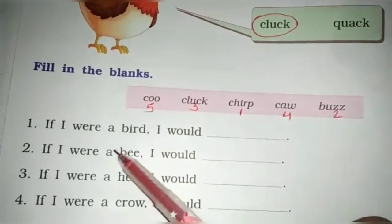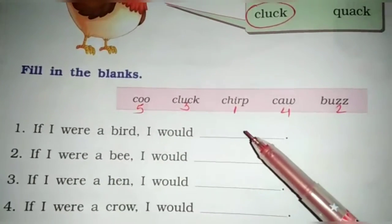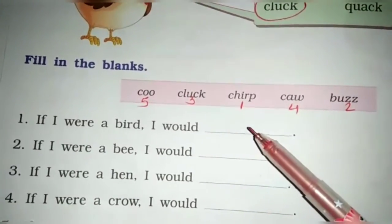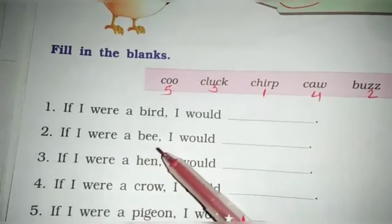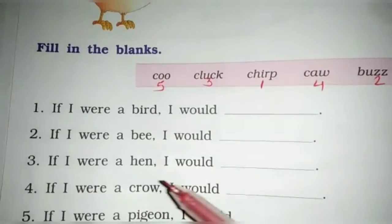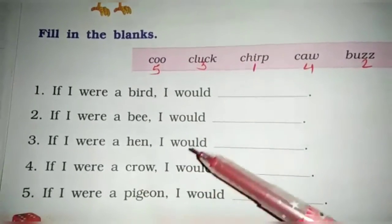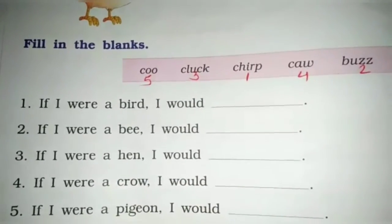Next exercise. Fill in the blanks. If I were a bird, I would dash. Bird की sound क्या होती है? Chirp. If I were a bee, I would buzz. If I were a hen, I would cluck. So यह भी आपको homework में complete करने हैं.